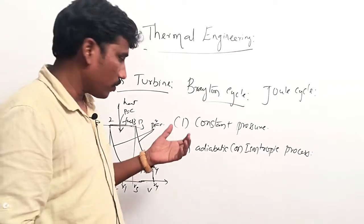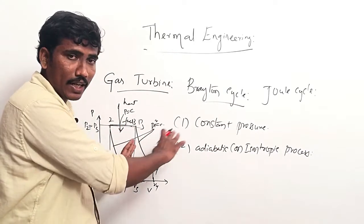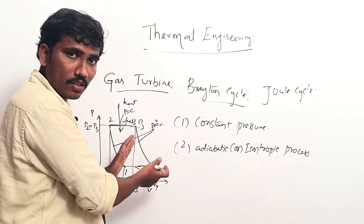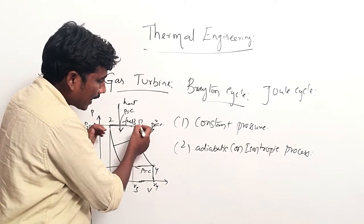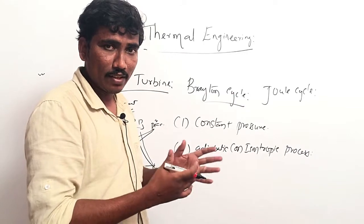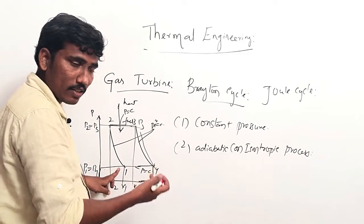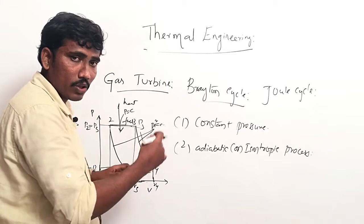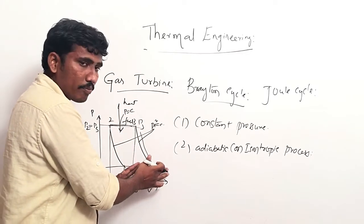After increasing the pressure and temperature of the air, we expand it in the turbine. Process 3 to 4 is the adiabatic expansion process. We expand the compressed air in process 3 to 4. Whenever expansion takes place, volume increases, and obviously pressure decreases. That is why P1 equals P4 — whatever air is sucked into the compressor at P1, after expanding in the turbine, pressure drops to P4.